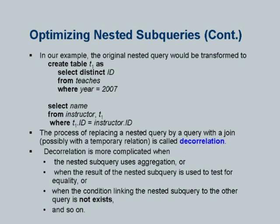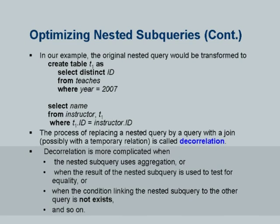I have already covered the material in this slide. This is a more complex one which takes care of duplicates. I will just note again that decorrelation is more complicated when the nested subquery involves aggregation and it is not an EXISTS but an equality condition. There are a lot of issues which a real optimizer has to deal with.